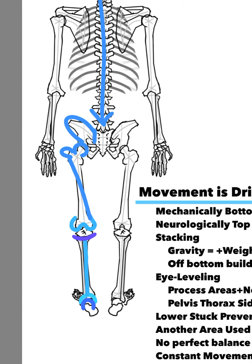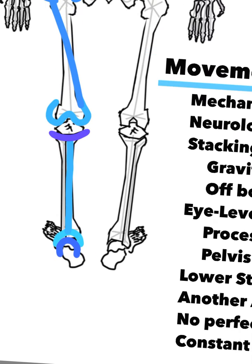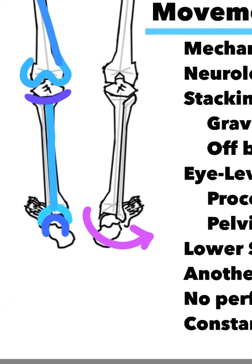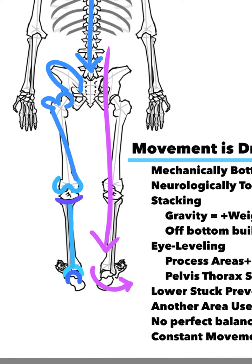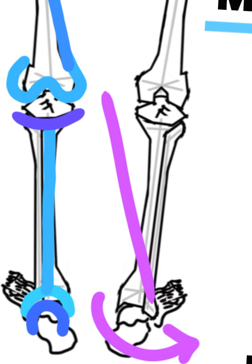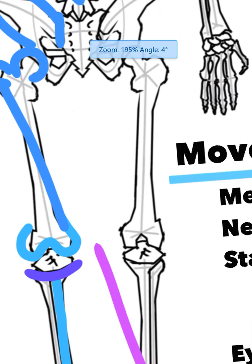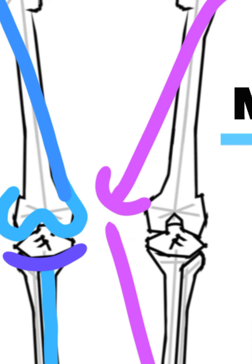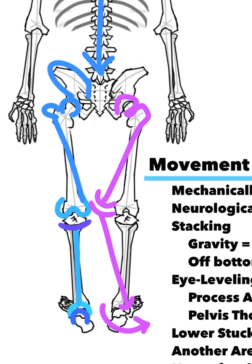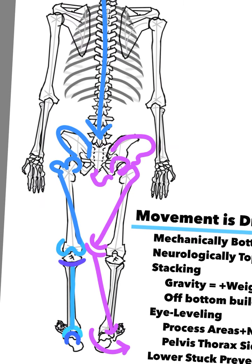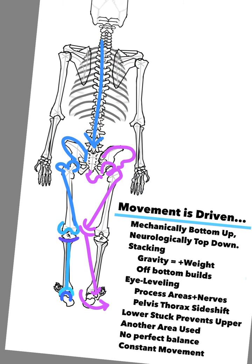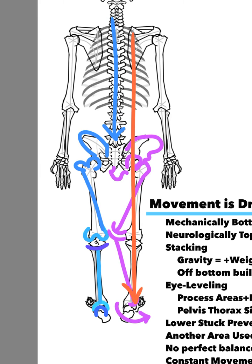This stacking nature can also be a problem. If we take the foot and drift it outwards — externally rotate it — the weight borne on that side will be side-shifted as well. The tibia's position becomes offset, meaning the femur also has to compensate. The concave-convex relationship must be adjusted, and this will often drive one side of the pelvis down, creating one low side and one high side — an unleveling. This happens because the weight stacked above encourages it.